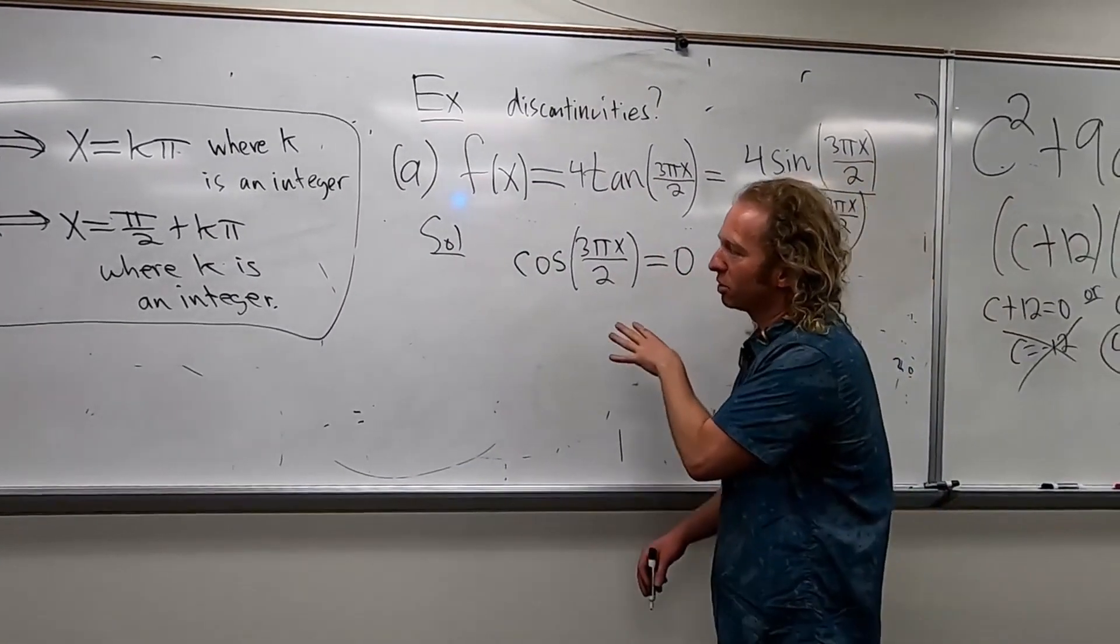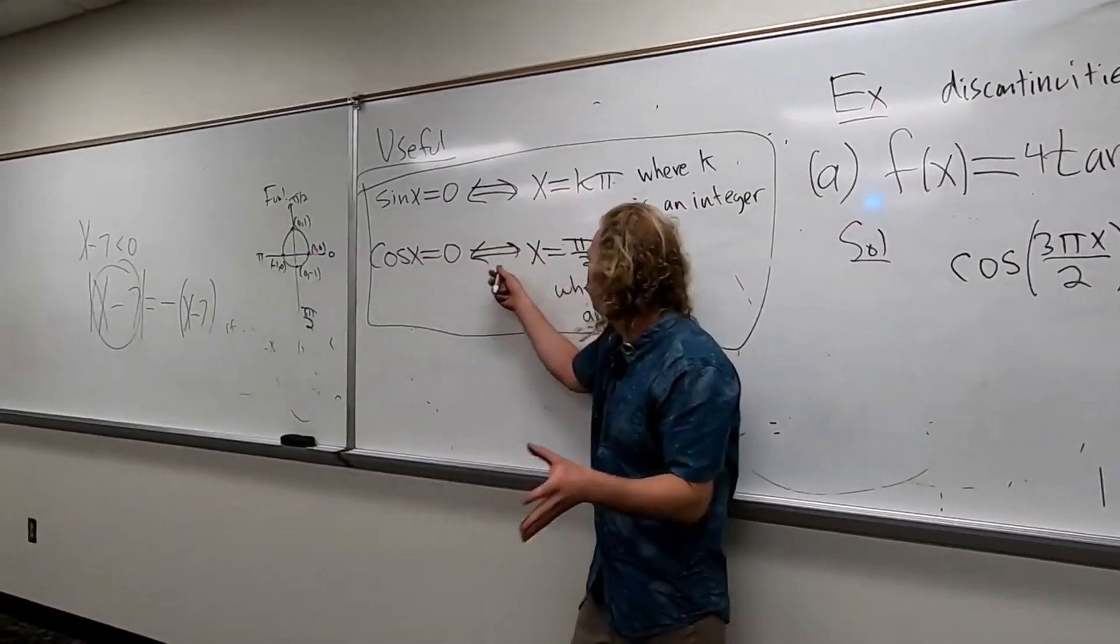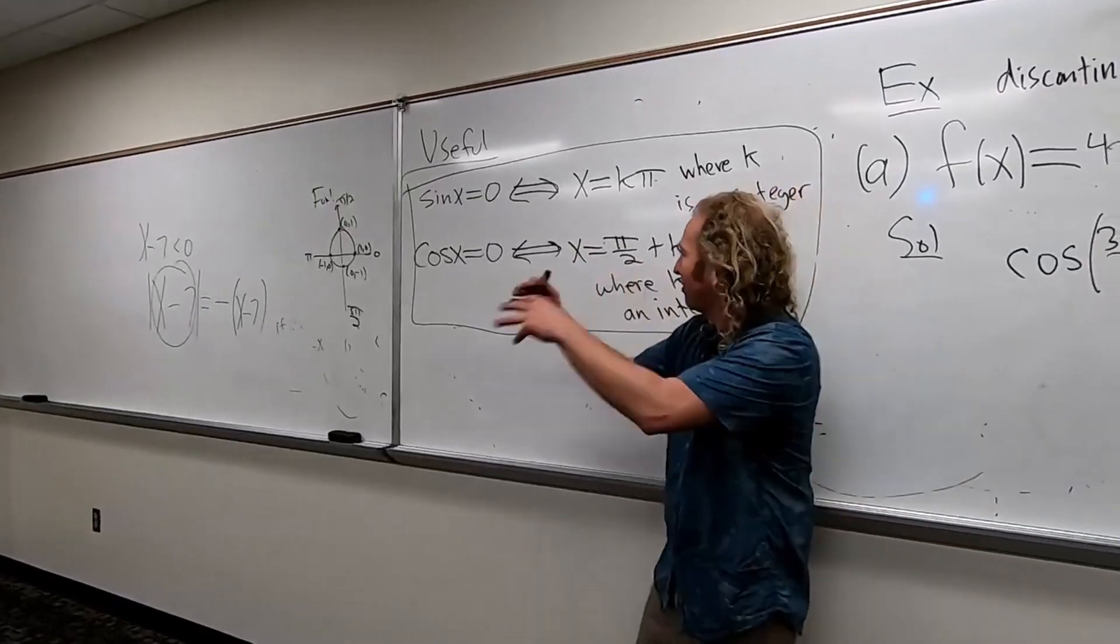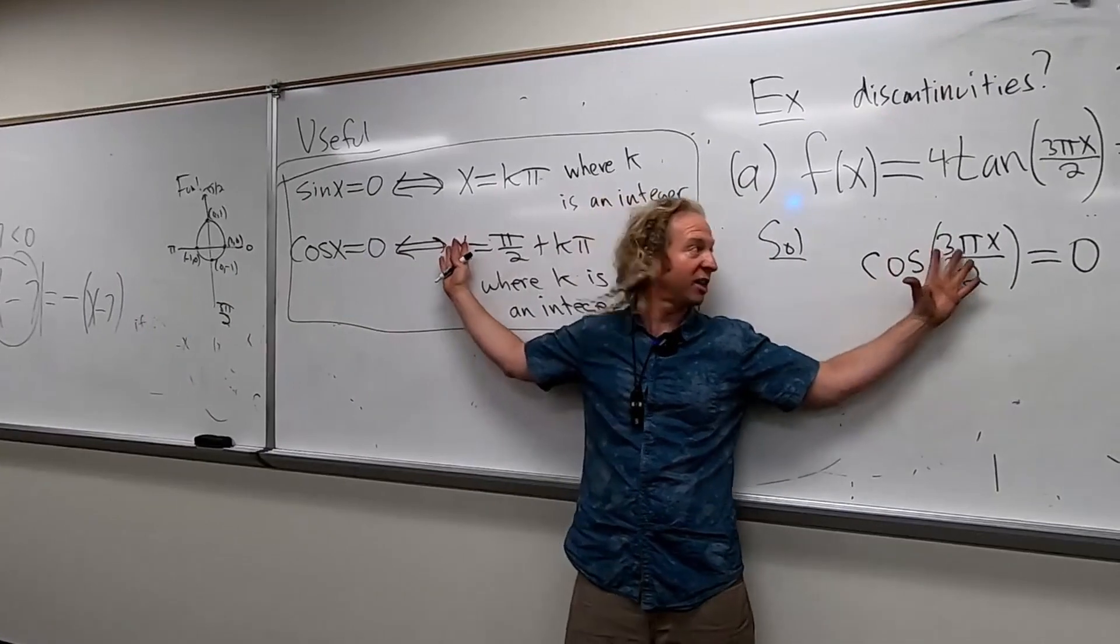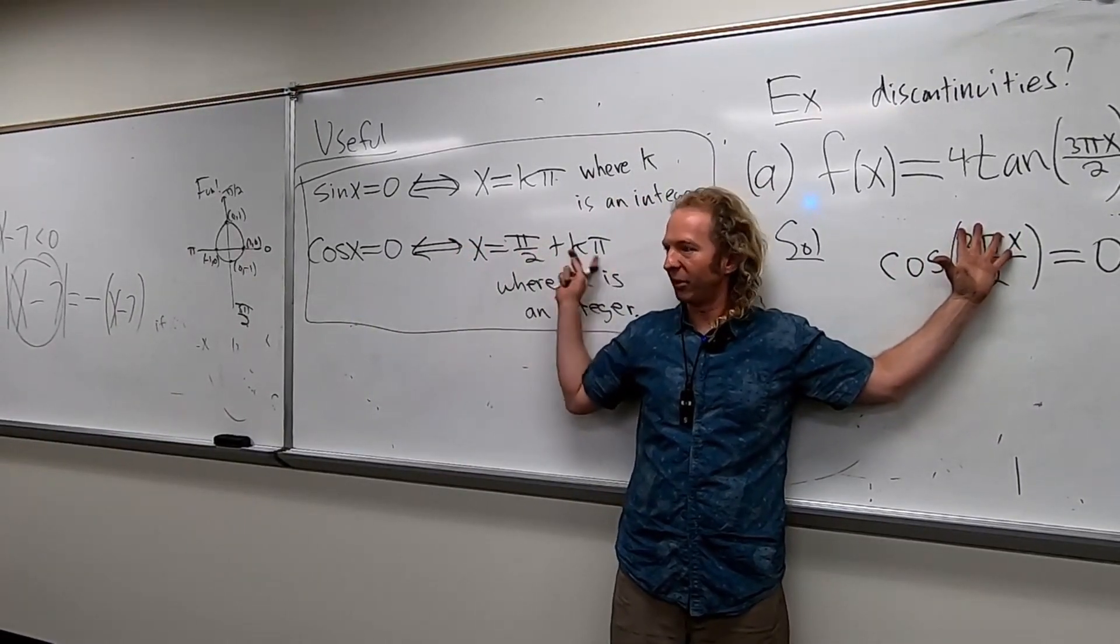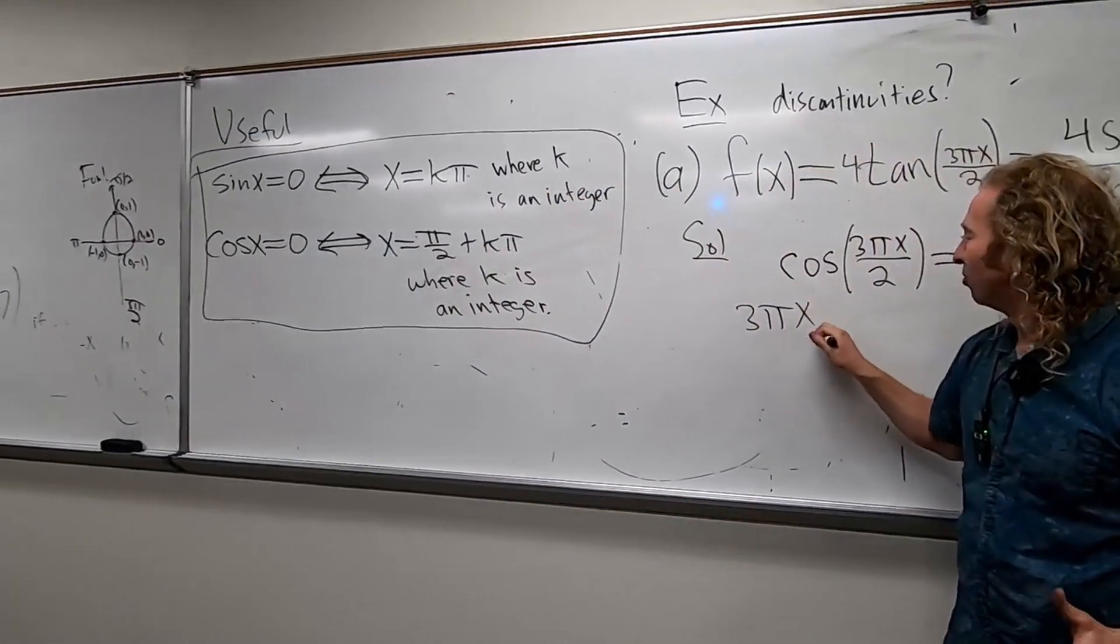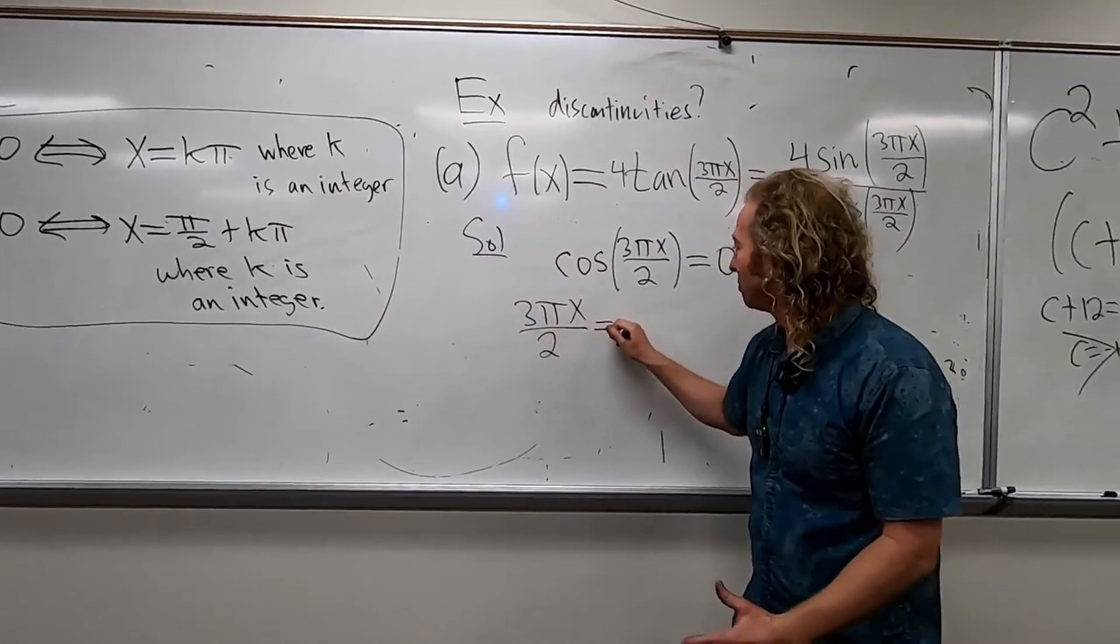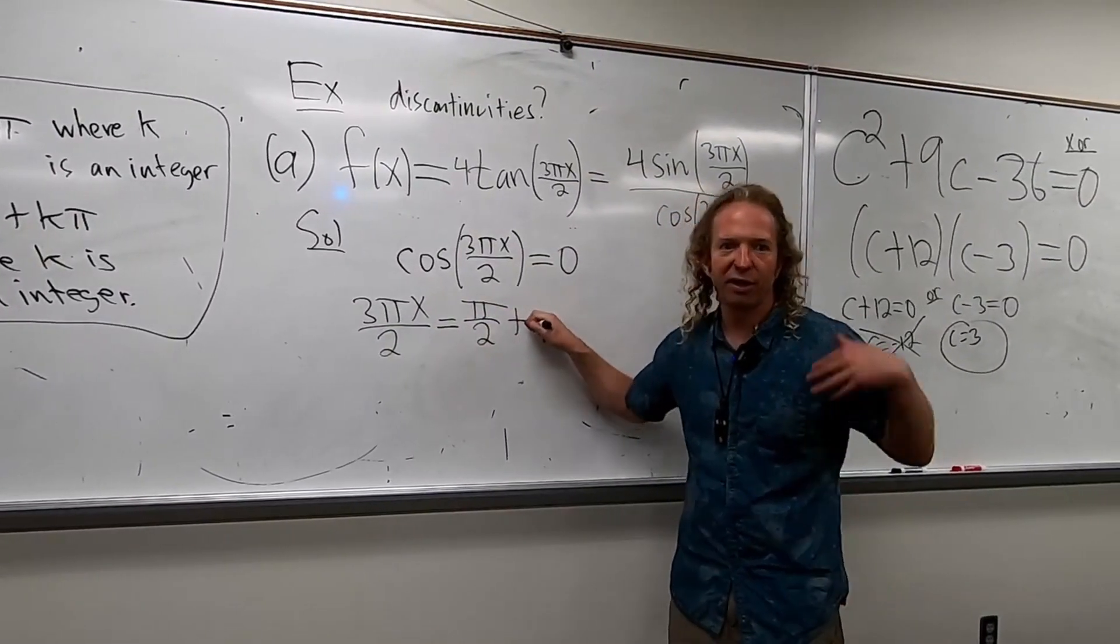So, when is cosine equal to 0? Well, the cosine of blah is equal to 0 when blah equals that, right? Just think of x as like something. So this is your x. So you just take this and you set it equal to pi over 2 plus k pi, okay? So now we have 3 pi x over 2 equals pi over 2 plus k pi.